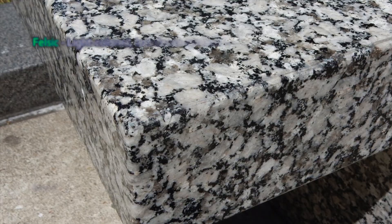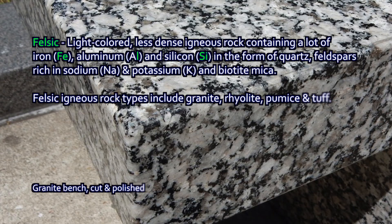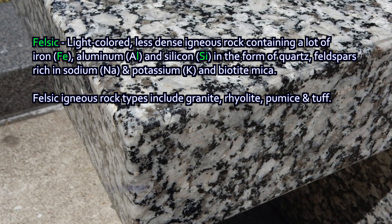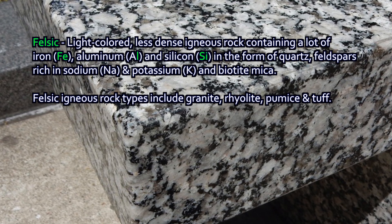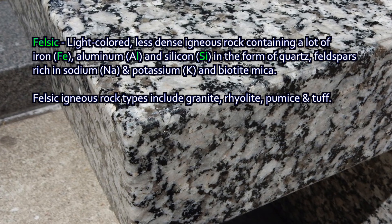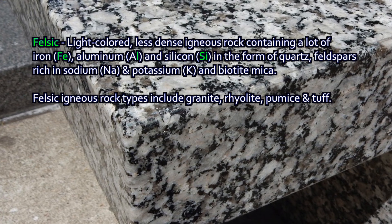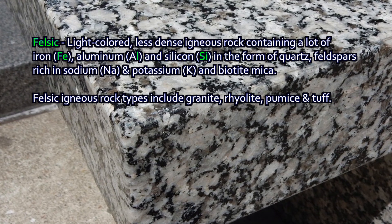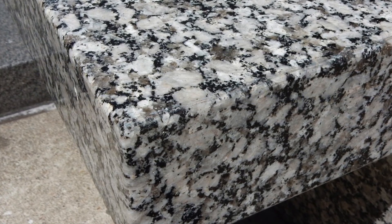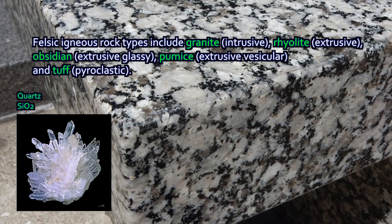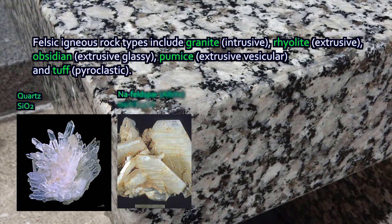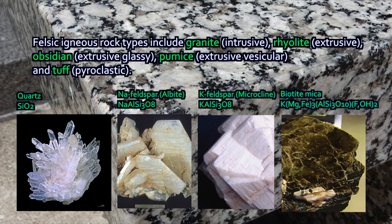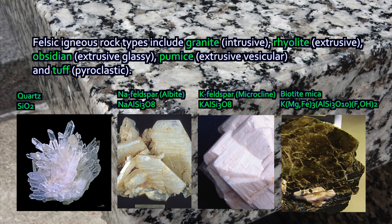Mafic rocks compared to felsic rocks — felsic, the contraction there is actually iron, aluminum, and silicon. Because these rocks are very light, they're light-colored typically, and they're not very dense compared to mafic rock. Felsic rocks include things like granite, white with quartz and types of feldspar minerals, some mica in there, and the iron is not in the same form that it's in a mafic igneous rock.